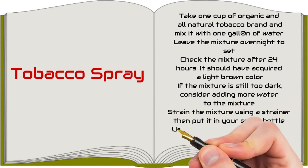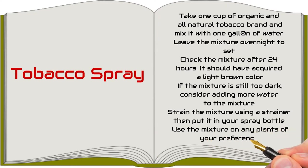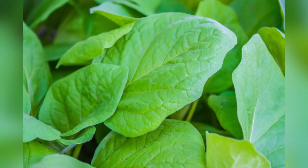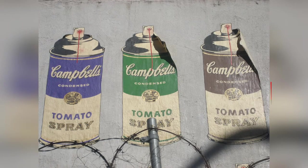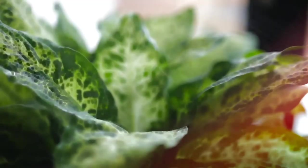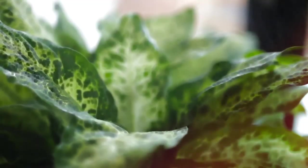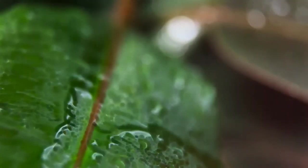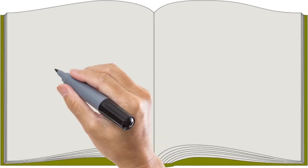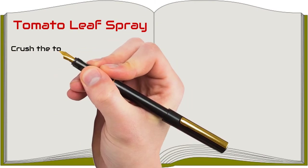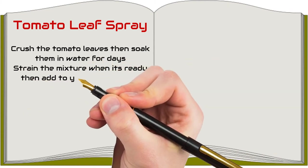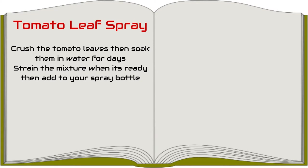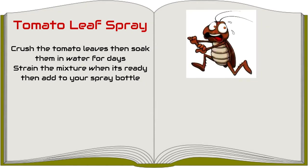This is an effective organic pest control pesticide that effectively kills mites and aphids in your garden. This is because the tomato leaves contain alkaloids which are fatal to most of the insects. To make the spray, you need to crush the tomato leaves, then soak them in water for days. Strain the mixture when it's ready, then add to your spray bottle. This homemade pesticide recipe is great for whiteflies and grasshoppers control. However, you need to handle the tomato leaves with care. They are poisonous and should not be used on food-bearing plants.